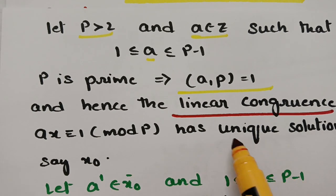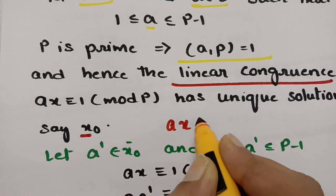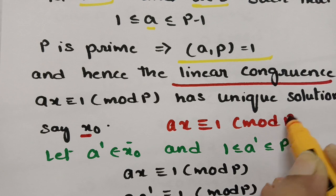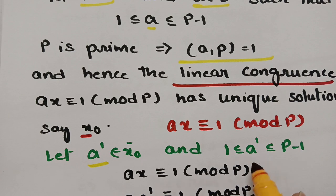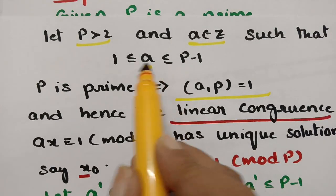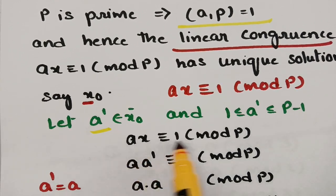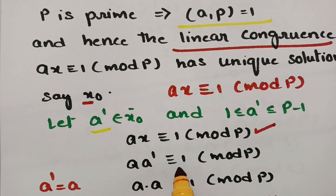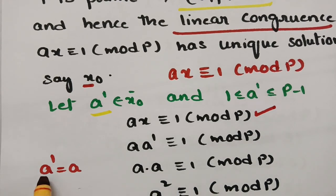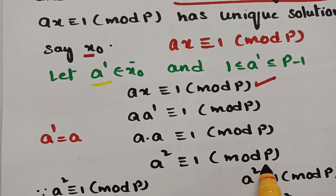We have a unique solution, call it x₀, and let a' denote this solution, where a' also lies between 1 and p−1. So the linear equation becomes a·a' ≡ 1 (mod p). Now suppose a' = a; then a·a ≡ 1 (mod p), which means a² ≡ 1 (mod p).